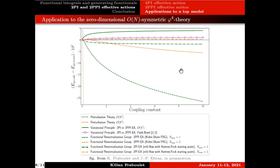The model I'm treating here is a phi^4 theory, and the coupling constant of the model is lambda over 24. I'm plotting results versus lambda over 24, and perturbation theory is organized with respect to lambda itself. It explodes very quickly because lambda in this range goes from 0 to 240.